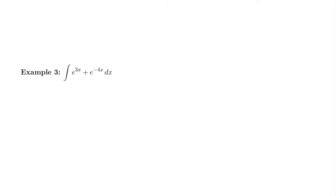Here we have a pretty tough u-substitution because we have e to the 3x, so we have e to a power that's more than just an x. So that's going to require a u-sub. And then we have plus e to the negative 4x, which is another e to a power that's more than an x. So we're going to have to use a u-sub there as well.